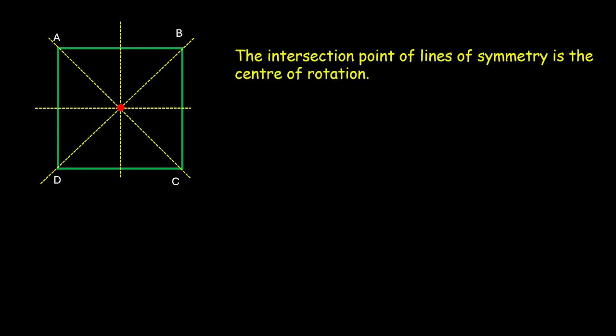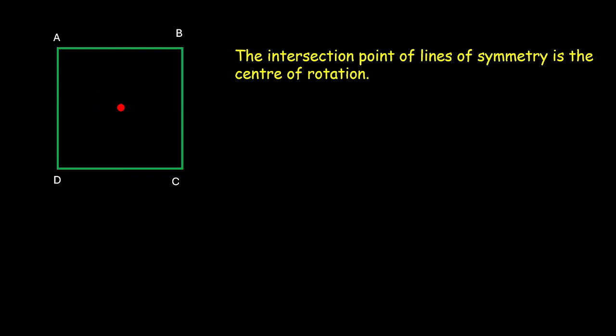Now, we have a square. How do we find the center of rotation for this square? Finding the center of rotation for circular objects is relatively easier because we can pinpoint the center. But how do we find the center of rotation for a square, a rectangle, or any polygon? What we can do is start by drawing the lines of symmetry — one horizontally, one vertically, and two diagonally. The intersection point of the lines of symmetry forms the center of rotation. So this red dot is the center of rotation for this square.